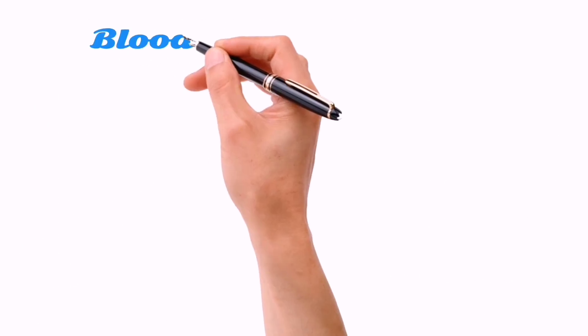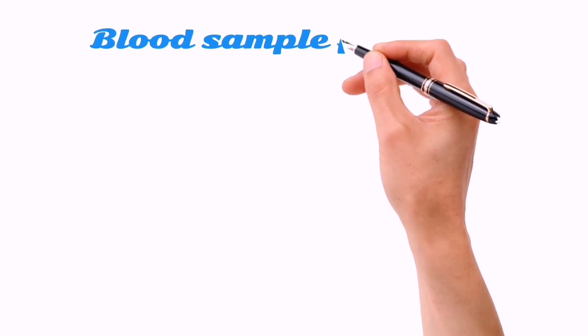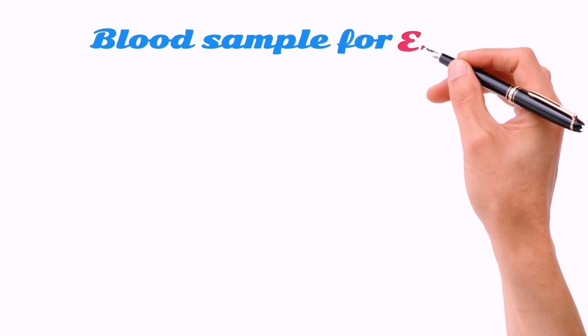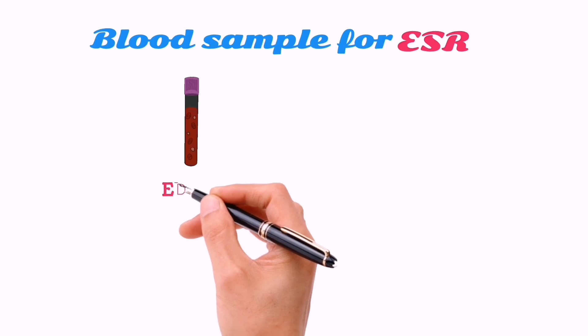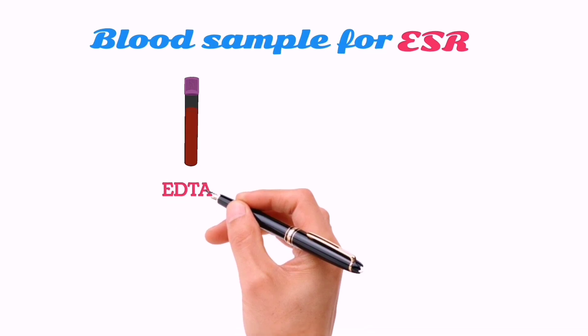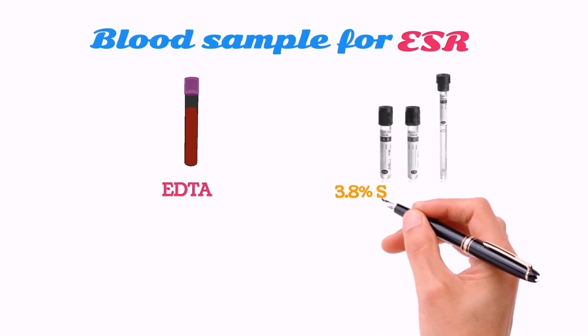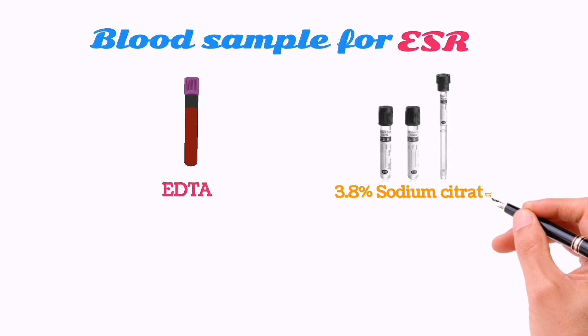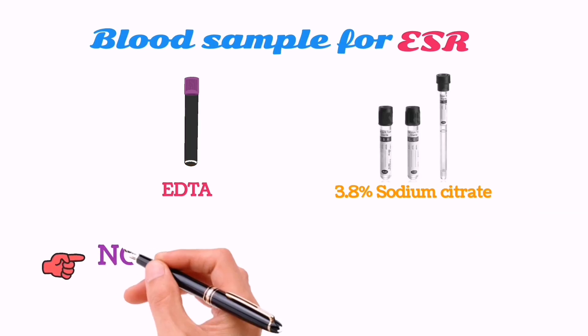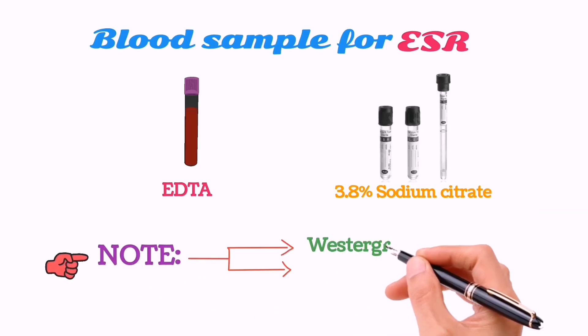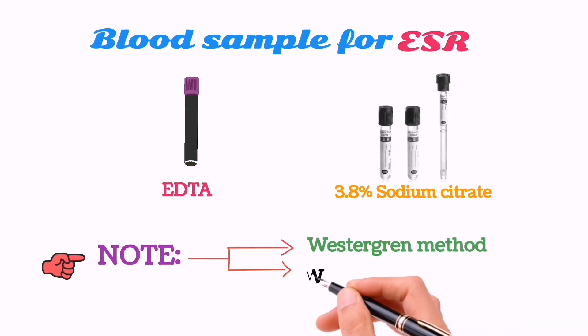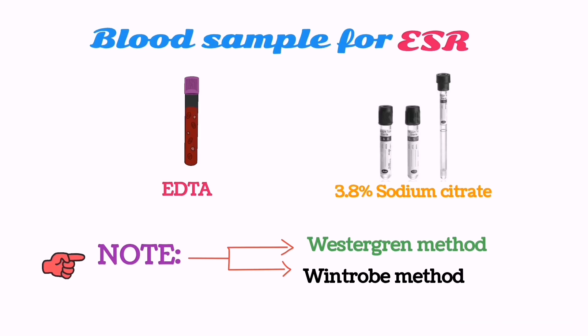Now, what type of blood sample is needed for ESR? These must be an EDTA sample or a 3.8% sodium citrate sample. The two methods used for ESR include the Westergren method and the Wintrobe method.